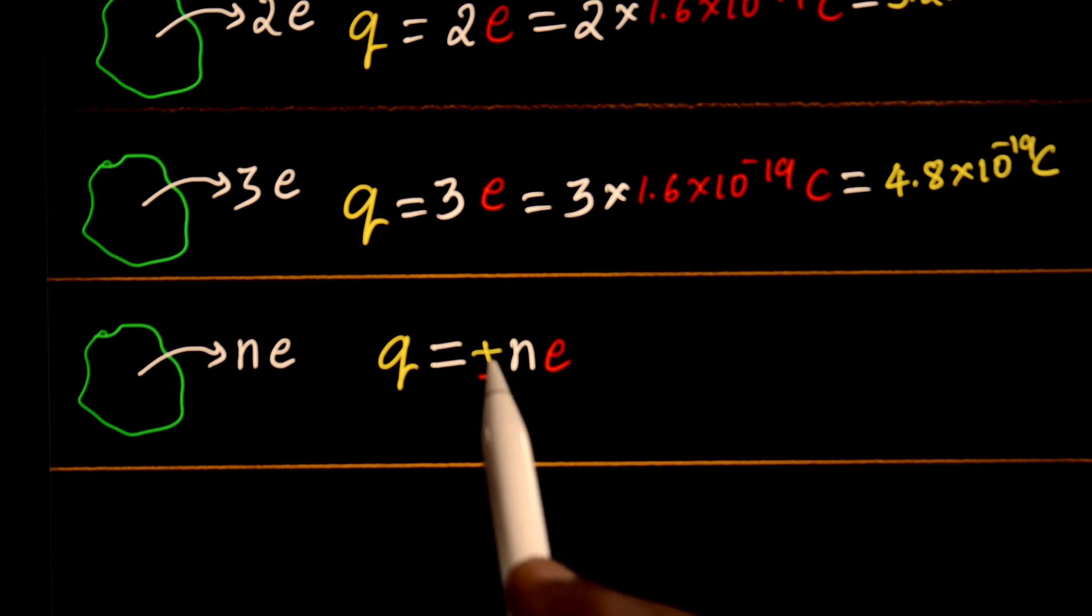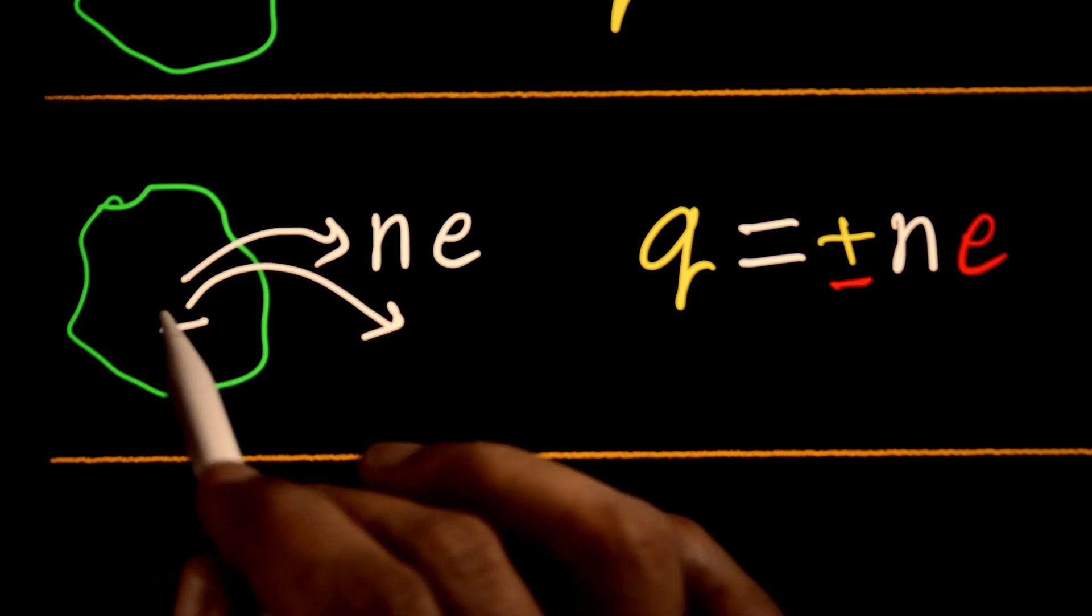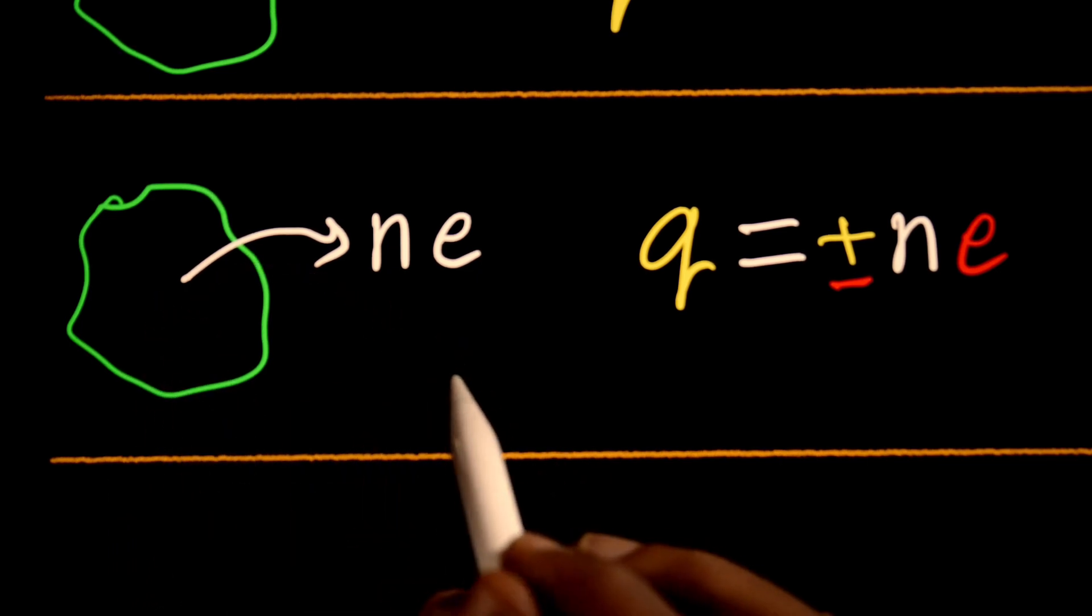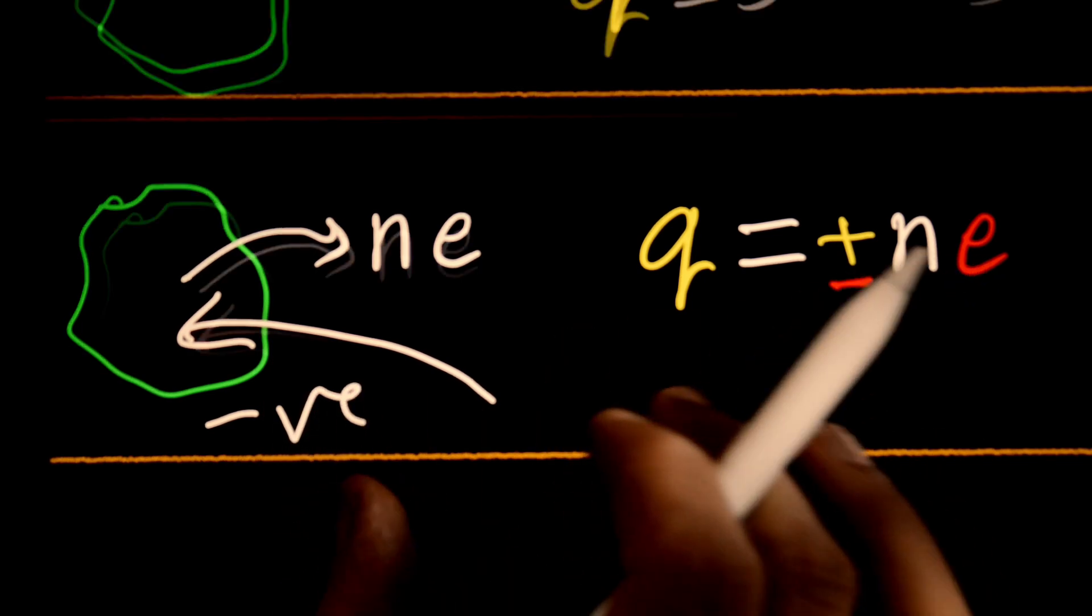Why this plus or minus? If you remove electrons from this system, it becomes positively charged. If you add electrons to the system, you have negative charge. This is quantization of charge.